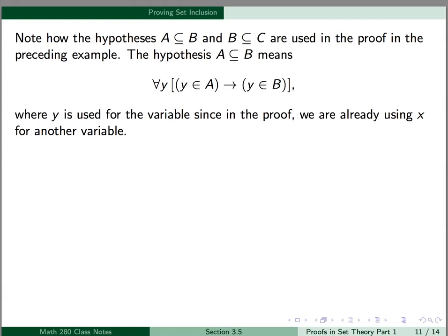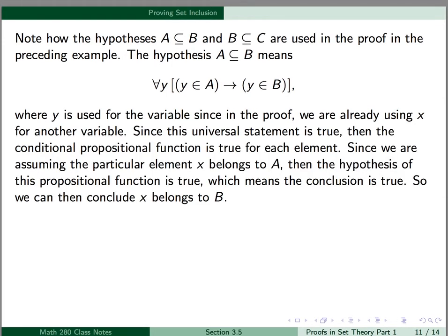Note how the hypotheses A⊆B and B⊆C are used in the proof. The hypothesis A is a subset of B means for every element y, y is an element of A implies y is an element of B — here I've used y for the variable since in the proof we're already using x for another variable. Since this universal statement is true, the conditional propositional function is true for each element. Since we're assuming that the particular element x belongs to A, then the hypothesis of this propositional function is true, which means the conclusion is true. We can then conclude that x belongs to B.